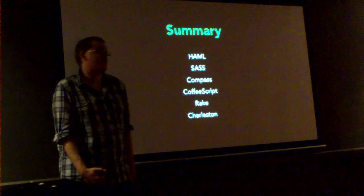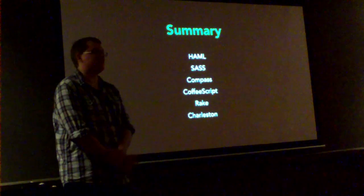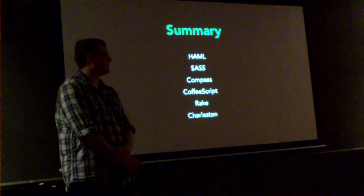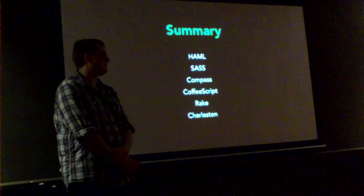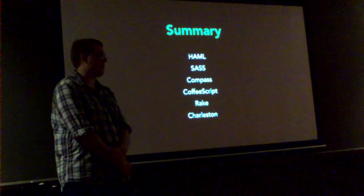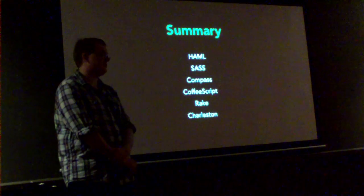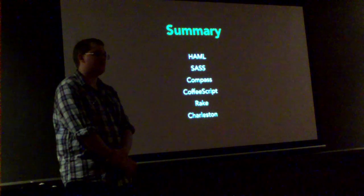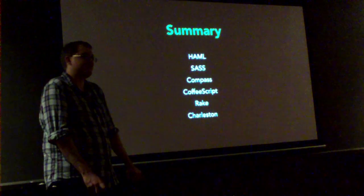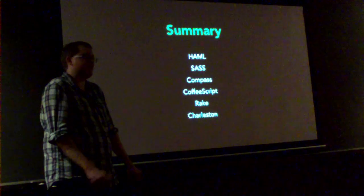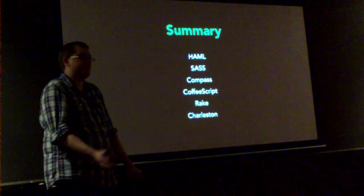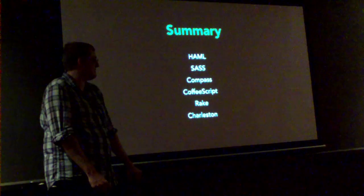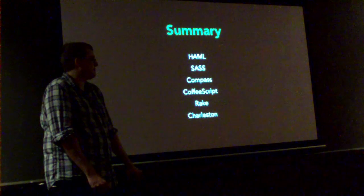So the stuff we talked about is Haml, SAS, Compass, CoffeeScript, Rake, and Charleston. Is Compass the way you get mixins in SAS, or is it just SAS? Compass is basically a collection of mixins — it's like a library of facilities for SAS. SAS supports mixins natively, but Compass is a big bundle of mixins that are commonly used. So it's like a SAS library? Yes. So even if you just want to use SAS, it's better to use Compass since you get more options.